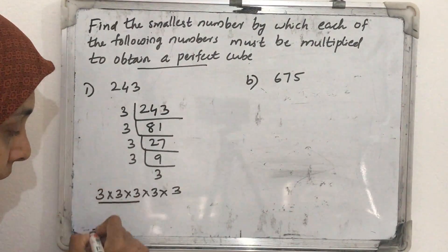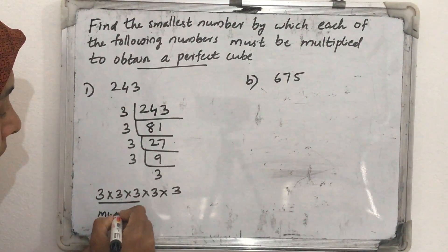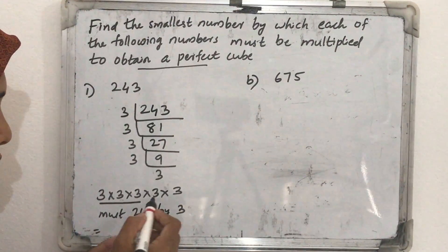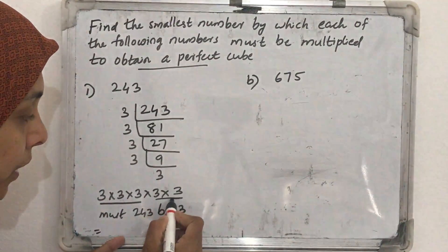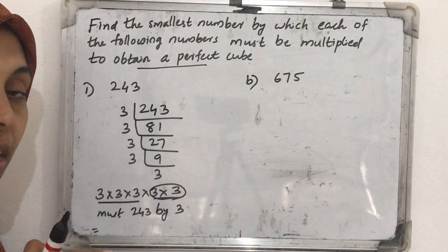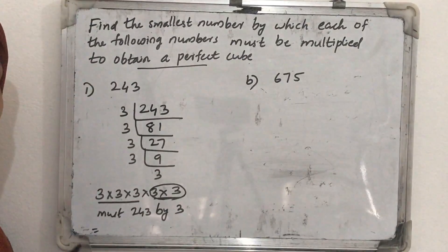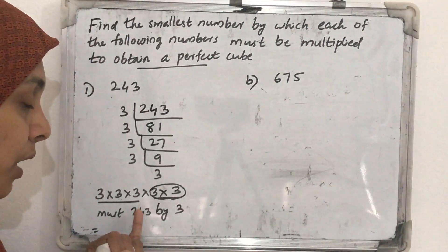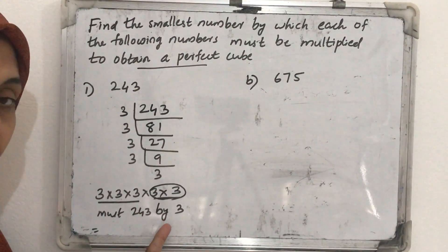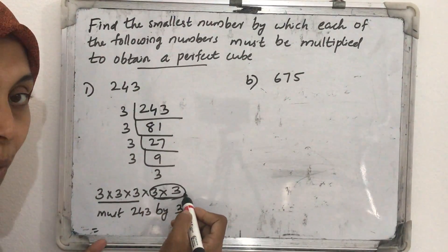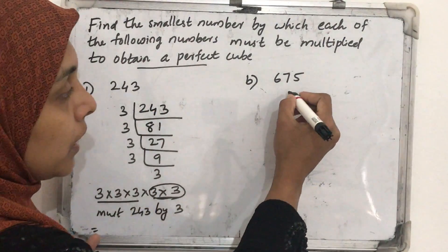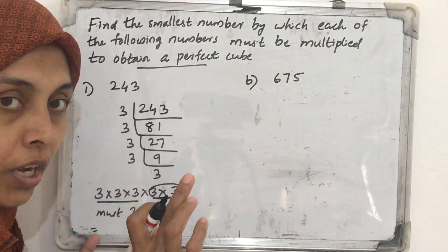So multiply 243 by 3 to get a perfect cube, because we need one more 3 to complete the triplet. Here only two 3s are there but we need three 3s — a triplet of 3 — to get a perfect cube. So we multiply by 3, and then we will get another triplet. So 243 should be multiplied by 3.